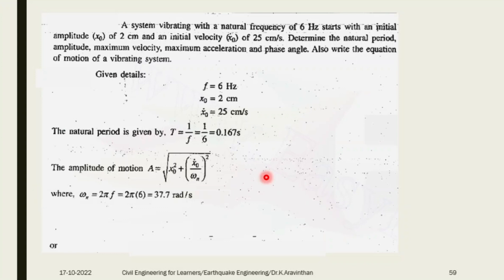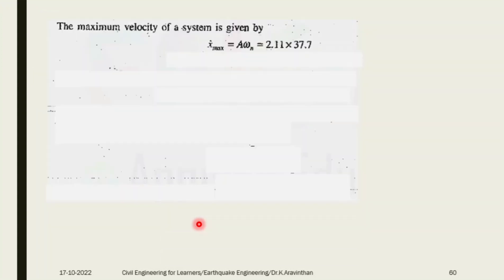Natural frequency ωn equals 2πf which is 37.7. Now you can find amplitude: square root of 2 squared plus 25 squared divided by 37.7 squared, equals 0.11. Maximum velocity is A times ωn. You have both parameters A and ωn available. Maximum velocity is 79.44 and maximum acceleration is 2994.76.